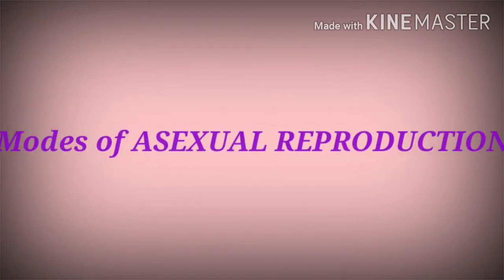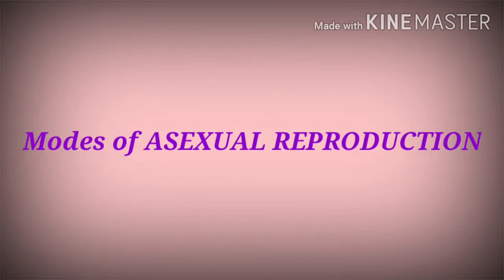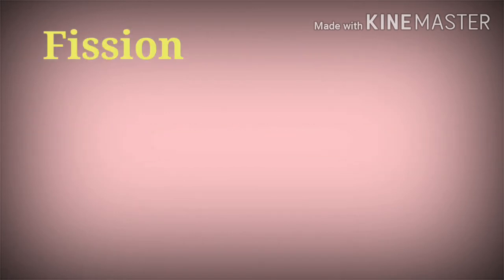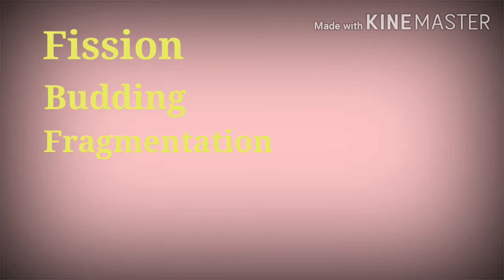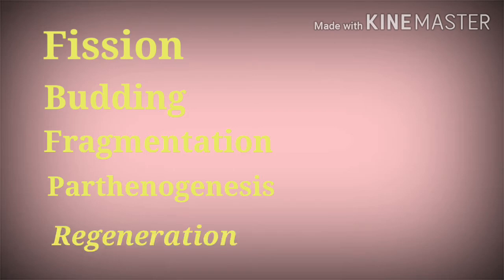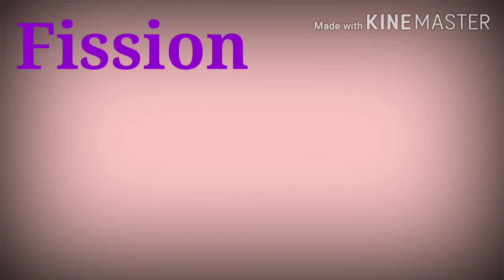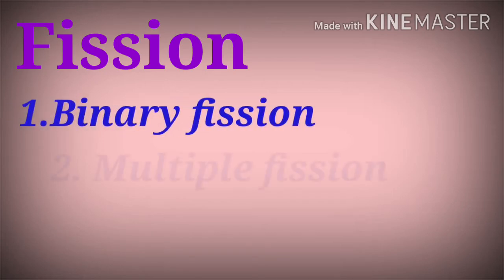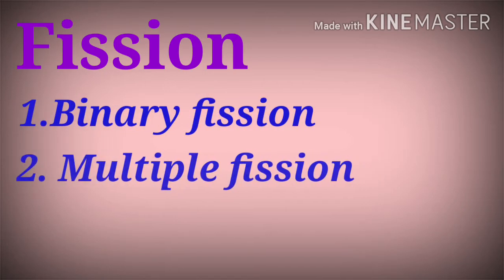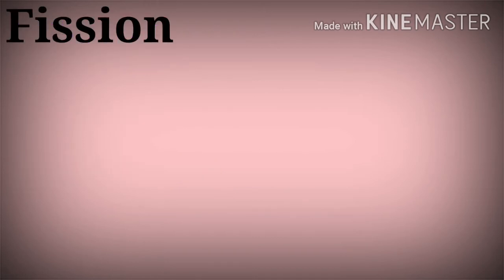Modes of asexual reproduction include fission, budding, fragmentation, parthenogenesis, parthenocarpy, and regeneration. Fission is of two types: binary fission and multiple fission.